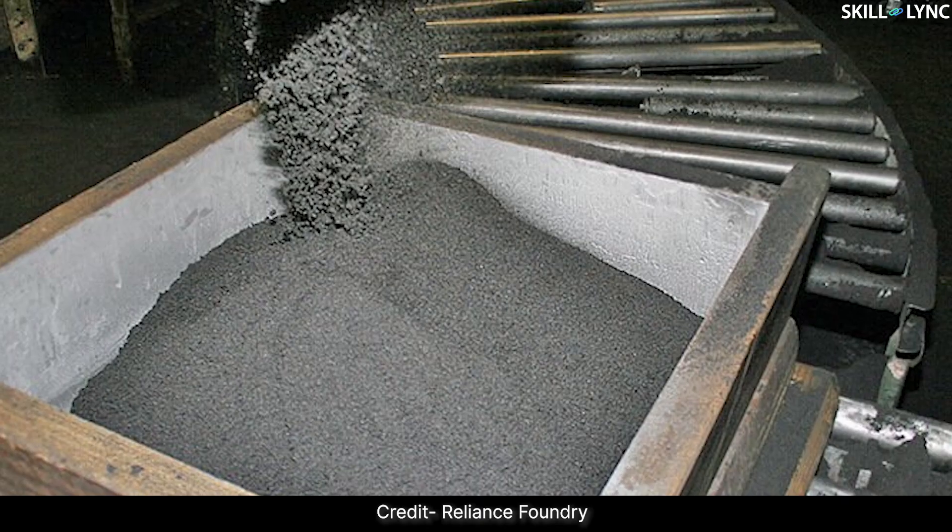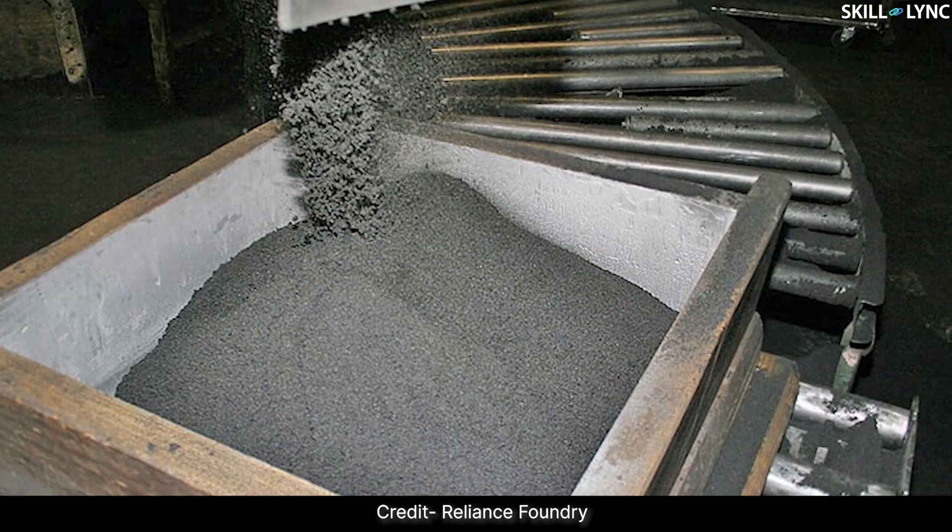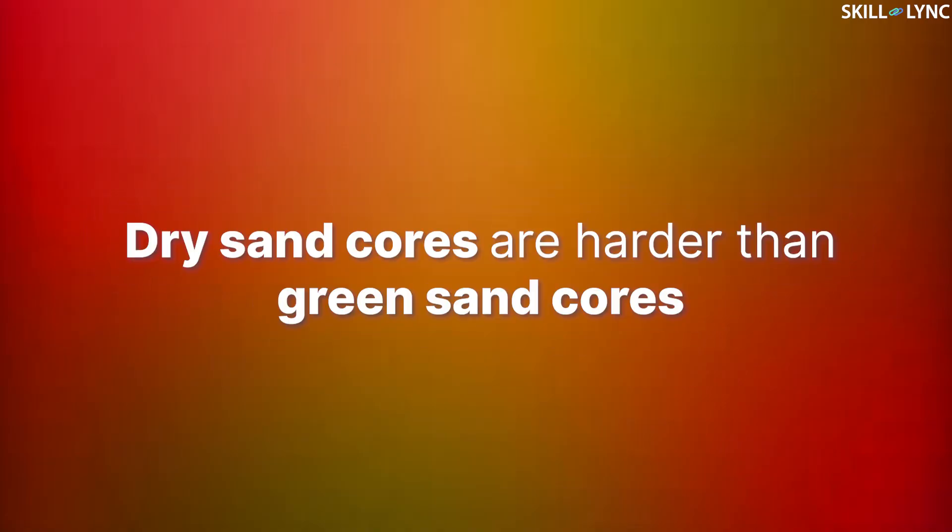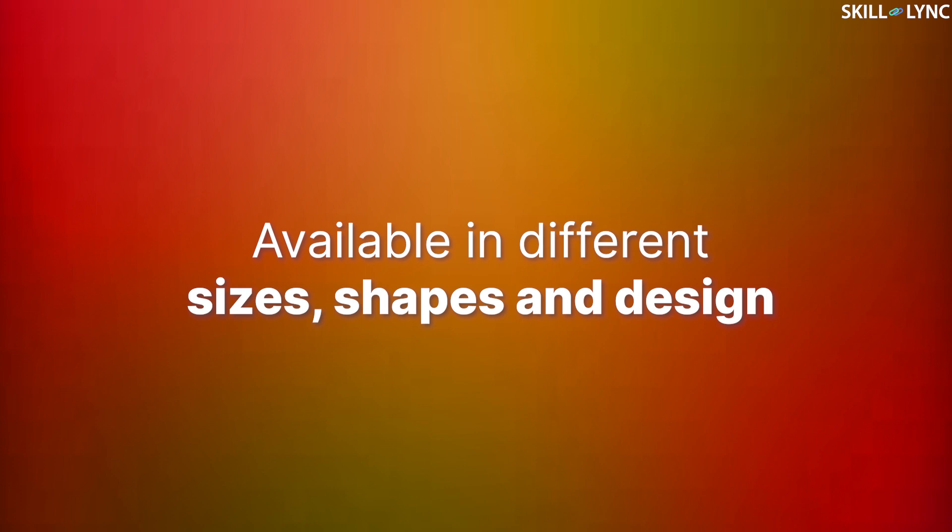On the other hand, dry sand core is a type of core which contains low or negligible moisture content. Thanks to this, dry sand cores are hard when compared to green sand cores. These cores are manufactured in separate core boxes and are available in different sizes, shapes, and designs as per the requirement.